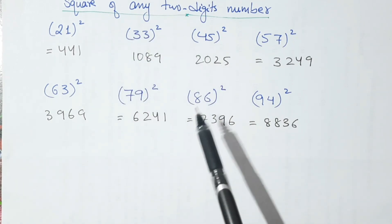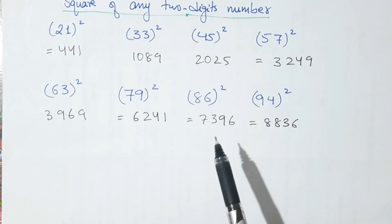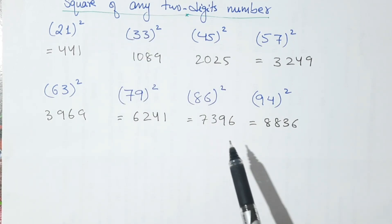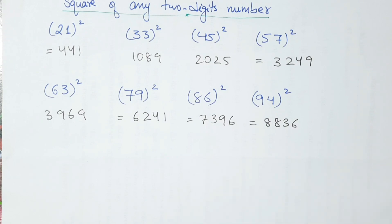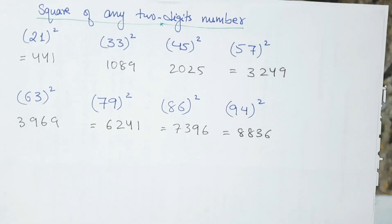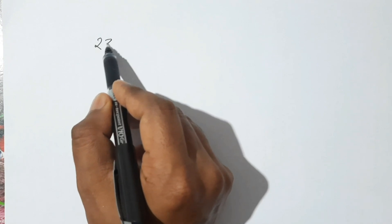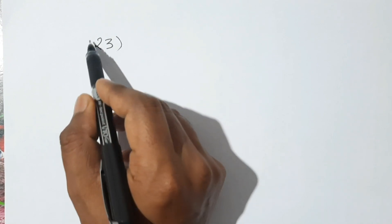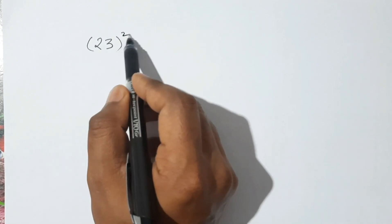You can also calculate the square of any two-digit number within a few seconds just by learning these simple tricks. So let us learn the trick. First let's take any two-digit number — suppose I'll take 23 square.